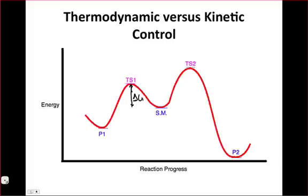That's because the delta G double dagger, or the activation energy, to get past transition state 1 is smaller than the activation energy required to get past transition state 2, and let's label these delta G double dagger 1 and delta G double dagger 2.